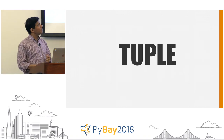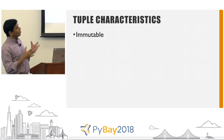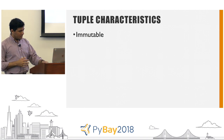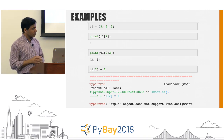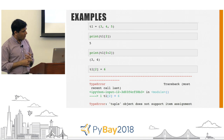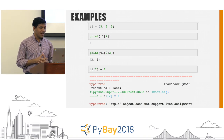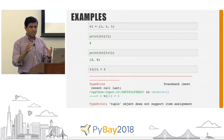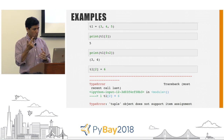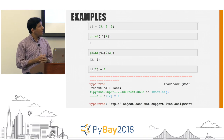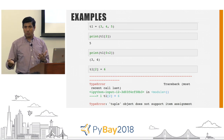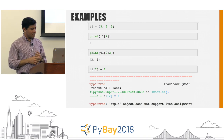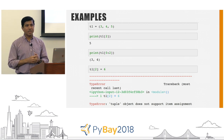The next one is tuple. The characteristic of a tuple is it's immutable. For example, T1 = (3, 4, 5): I can do indexing T1[2] which gives me 5, and T1[0:2] gives a slice as a tuple — indices 0 and 1, so 3 and 4. But tuples are immutable — you can't add or remove stuff. So T1[2] = 6 is illegal because you cannot change an element in a tuple.